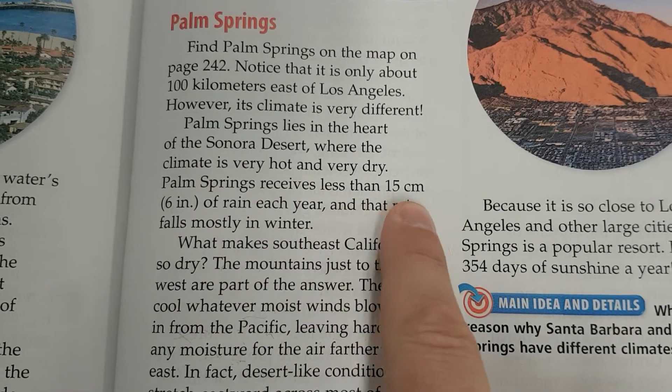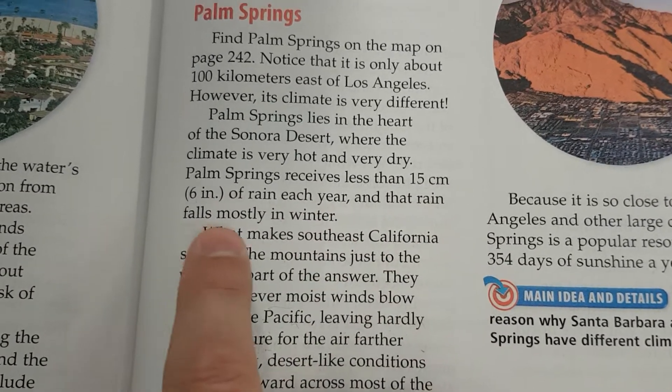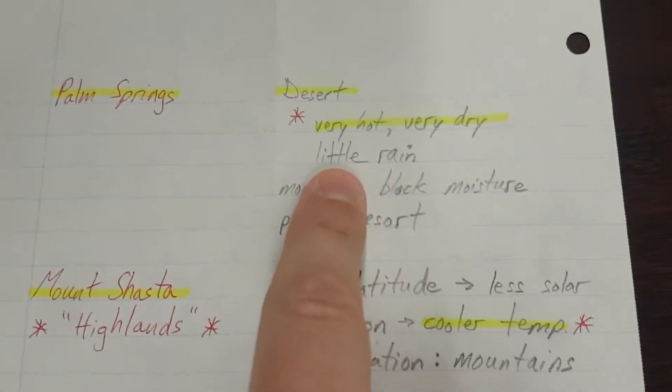Palm Springs receives less than 15 centimeters or 6 inches of rain every year, each year, and that rain falls mostly in winter. Little rain.